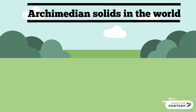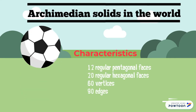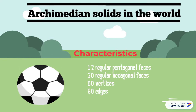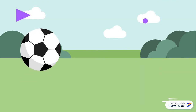Because the 13 Archimedean solids are so complex, they are not commonly seen in the real world. However, the truncated icosahedron is an exception. This shape is very similar to that of a soccer ball — despite the soccer ball having more of a sphere look, the stitching pattern of the ball is the same as the Archimedean solid.